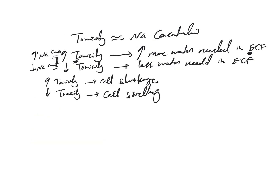ECF tonicity — in normal physiologic conditions — is equivalent to the tonicity that affects what water moves into. Brain cells are very sensitive to this, which is why the main symptoms of hyper- or hyponatremia are related to the CNS. It's because of either cell shrinkage or cell swelling that these problems occur.